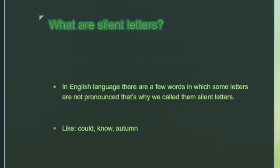Then 'know': K, N, O, W. We read it as 'no,' not 'kno.' Means K is silent here. The last word is 'autumn': A, U, T, U, M, N. We read it as 'autumn,' not 'autumn.' We do not pronounce the N here. That's why these letters are called silent letters.